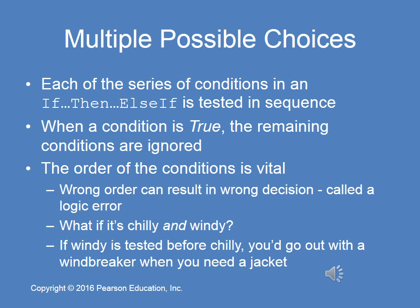Each condition is evaluated in the sequence in which it's listed. As soon as one of the conditions is true, the remaining conditions are ignored and not evaluated. So the order of the conditions is critical. The wrong order can result in a wrong decision, which would be a logic error. For instance, if it's both chilly and windy, and windy is tested before chilly, you go out with a windbreaker when you need a jacket.